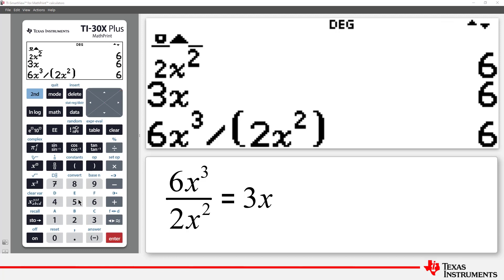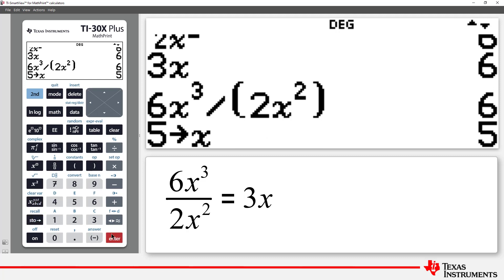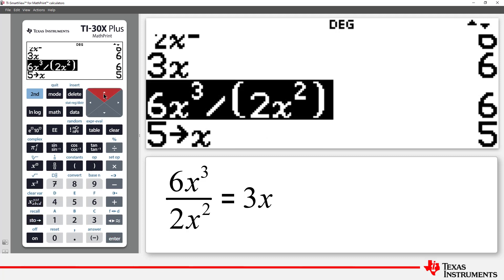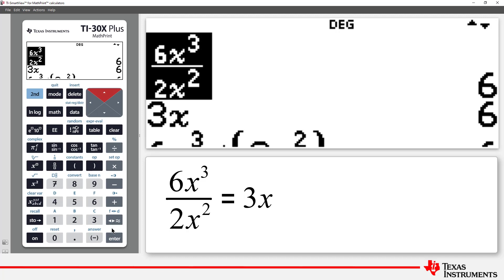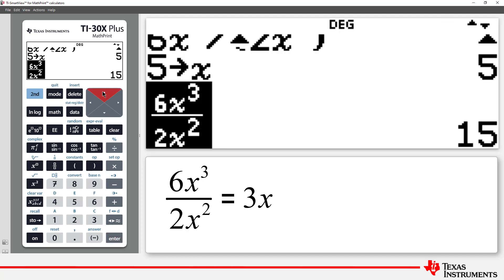Let's explore 6x cubed over 2x squared. We can see by substitution that this seems to be equal to 3x.